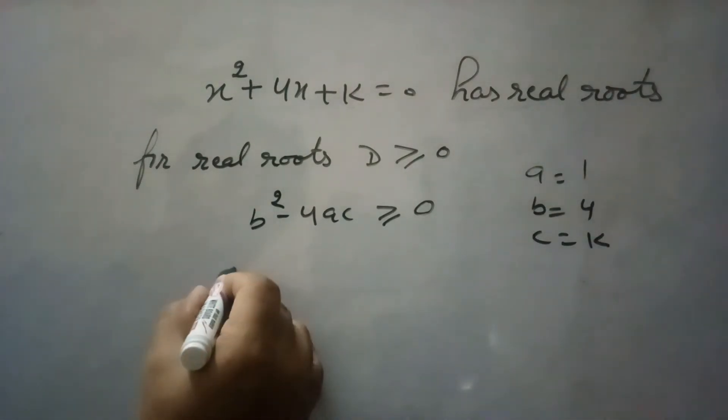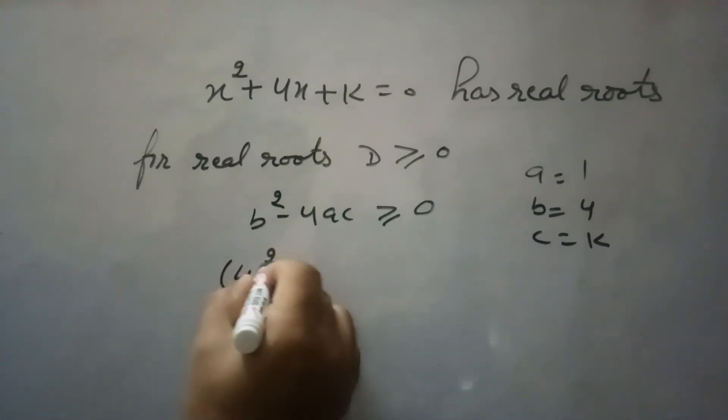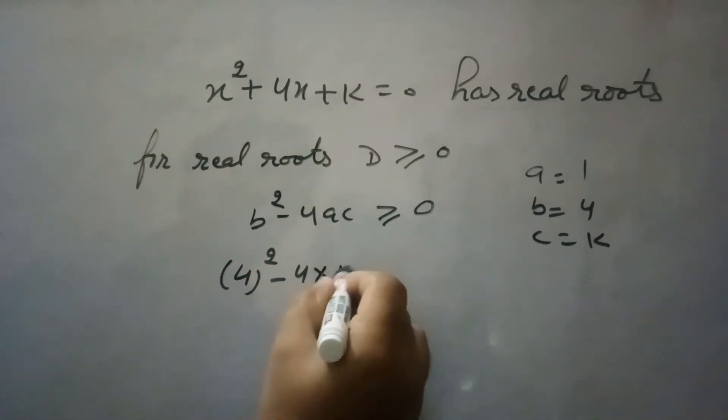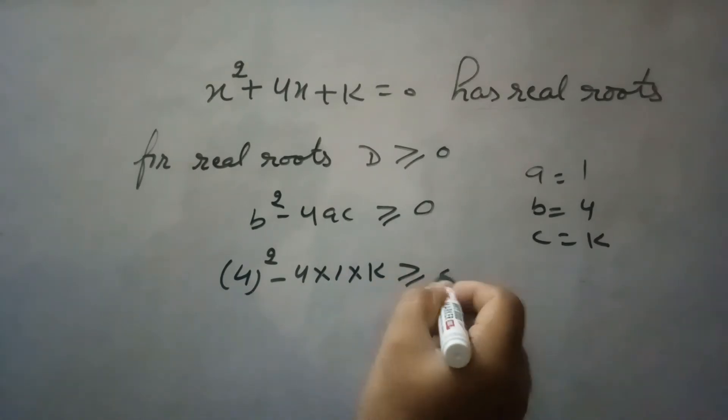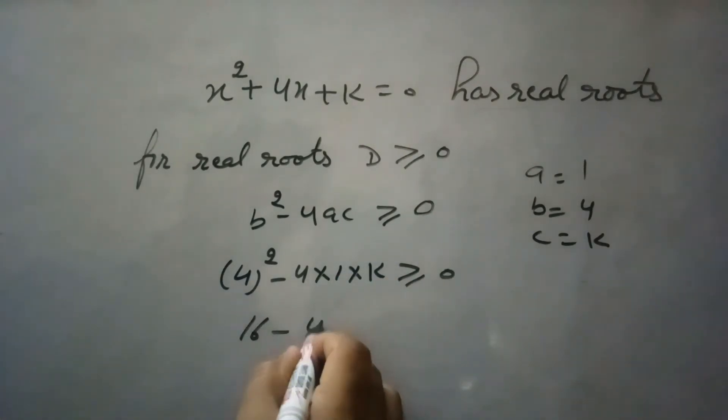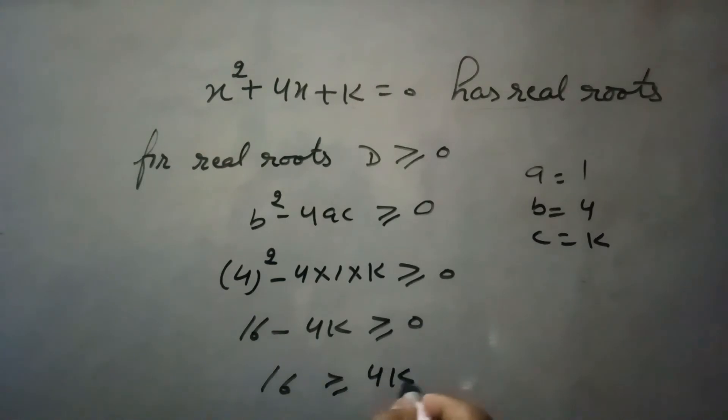Putting these values into the formula: 4² - 4(1)(k) ≥ 0, which gives us 16 - 4k ≥ 0, so 16 ≥ 4k.